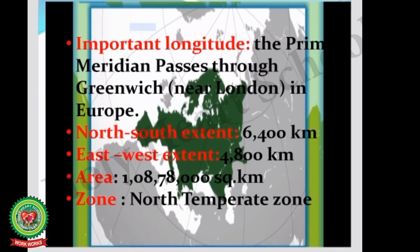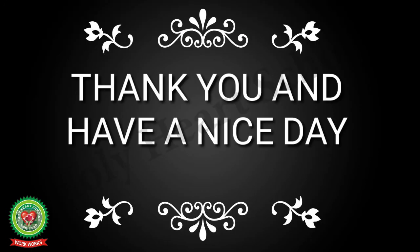Europe is separated from Asia by the Ural Mountains, Ural River, Caucasus Mountains, and the Caspian Sea, and from Africa by the Strait of Gibraltar and the Mediterranean Sea. Important islands include Sardinia, Sicily, Crete, Iceland, and Ireland. The prime meridian passes through Greenwich near London. Europe's north-south extent is 6,400 km and east-west extent is 4,800 km. Its area is 1 crore 8 lakh 78,000 square kilometers. Europe lies completely in the north temperate zone. Thank you, have a nice day.